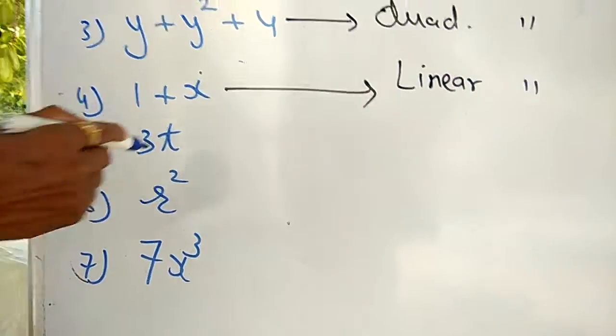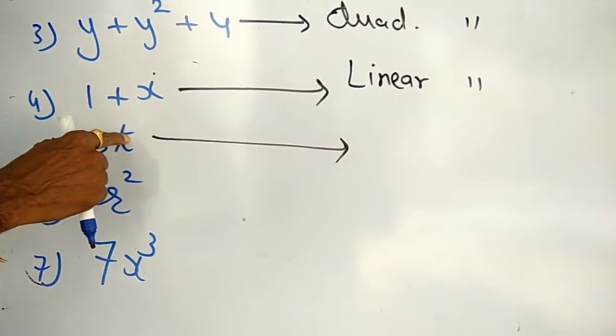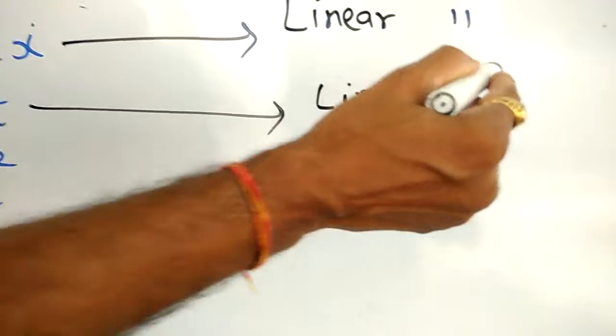Fifth one: 3t. Here also, the exponent of t is 1. Therefore, this is also called as linear polynomial.